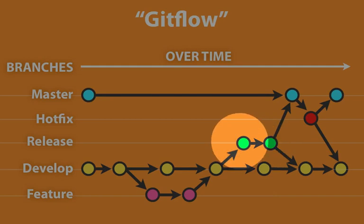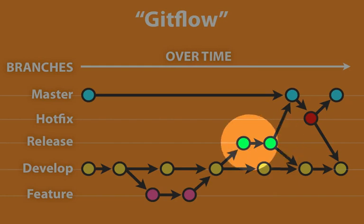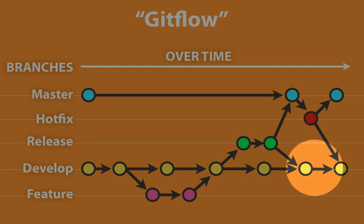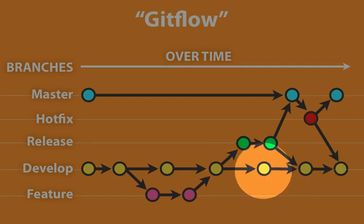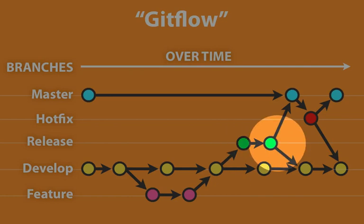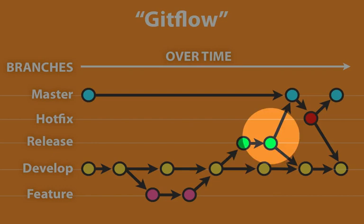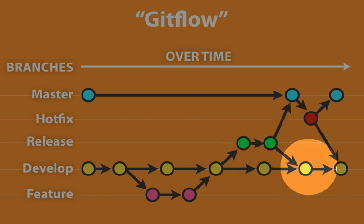Now as you find bugs and missing features on this release branch, you make fixes to that branch directly. And at the same time, there's still development going on in the development branch where people are adding new features and bug fixes that are going to be added to the next release. When the release is done being tested, it's then pushed to production, and any changes that were made to this release are then merged back into the development branch in order to carry them forward to the next release.